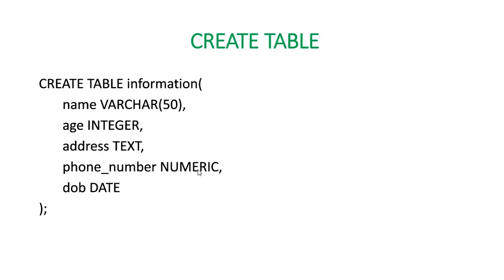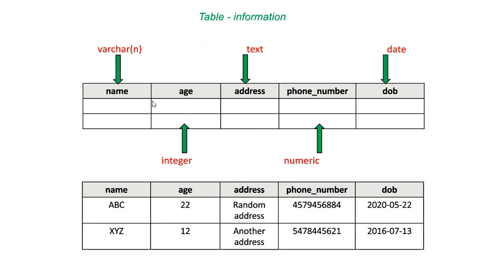Why are we using numeric and not integer for phone number? Because integer holds only 10 digits in its range. But for a phone number it can be more or less than 10 digits — for example, if you add a country code before the number it will exceed that length. That's why we use numeric for phone number. So: name uses varchar(n), age uses integer, address uses text, phone number uses numeric, and date of birth uses date.